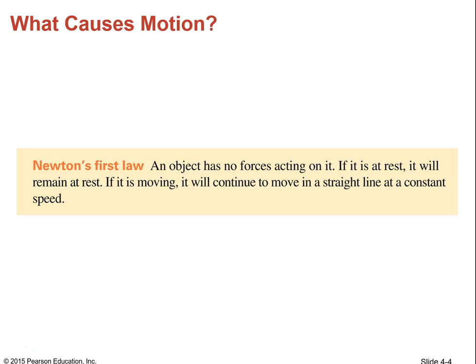Newton's first law of motion says if an object has no force acting on it — if it's at rest, it's going to remain at rest. If it's moving, it's going to keep going in a straight line at a constant speed. That's called no net force. If there's no net force acting on it, it's either going to remain stationary or remain going in a straight line at a constant speed.